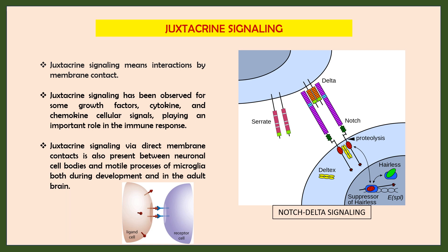Juxtacrine signaling has been observed for some growth factors, cytokines, and chemokines, as these all play an important role in immune responses. This type of signaling is also present between neuronal cell bodies and motile processes of microglia, both during development and in the adult brain. One example is Notch-Delta signaling, where the ligand cell has processes embedded in the cell membrane that attach to the receptor cell, and after direct contact the signaling carries out and we get the response.